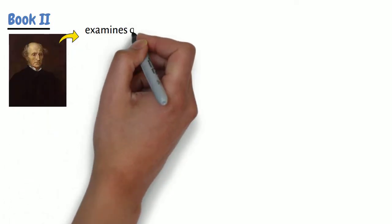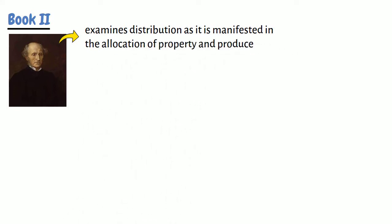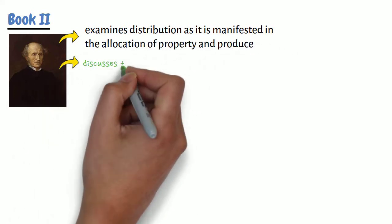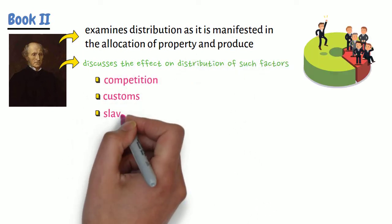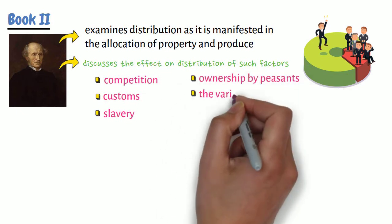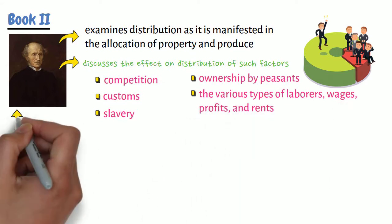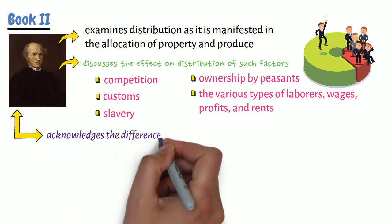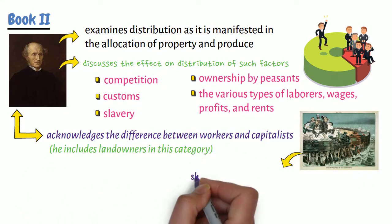Book 2 is where Mill examines distribution, as it is manifested in the allocation of property and produce. Mill discusses the effect on distribution of such factors as competition, customs, slavery, ownership by peasants, and the various types of labor, wages, profits, and rents. Mill acknowledges the difference between workers and capitalists — he includes landowners in this category — both of whom share the products of labor.